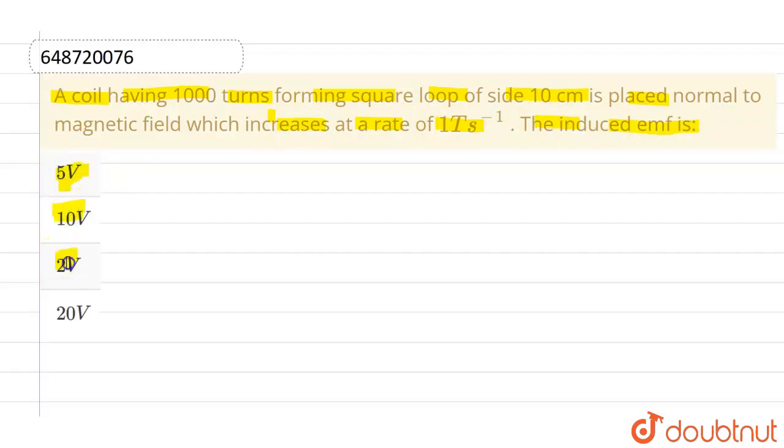And the given options are 5 volt, 10 volt, 2 volt and the last given option is 20 volt. Now, the area will be number of turns which is 1000 into the area of one turn.